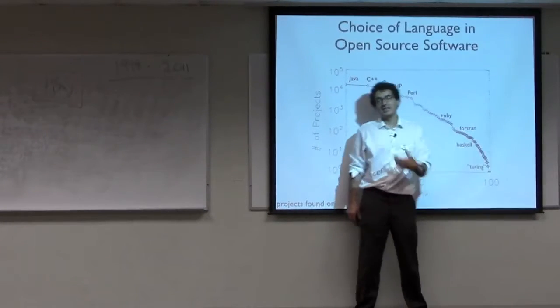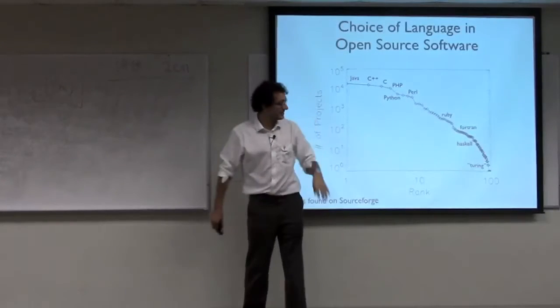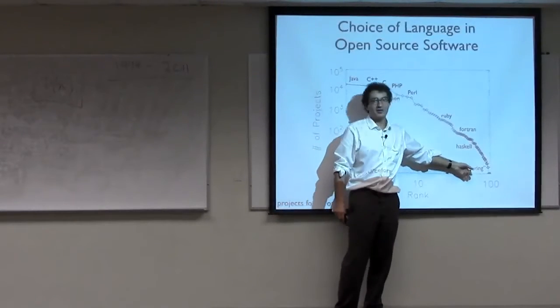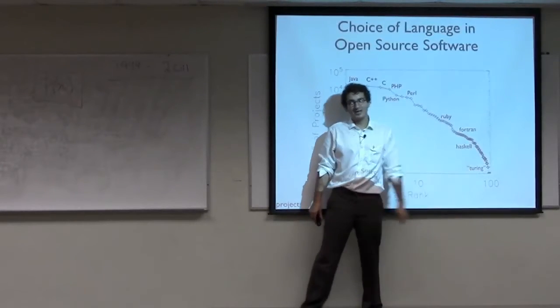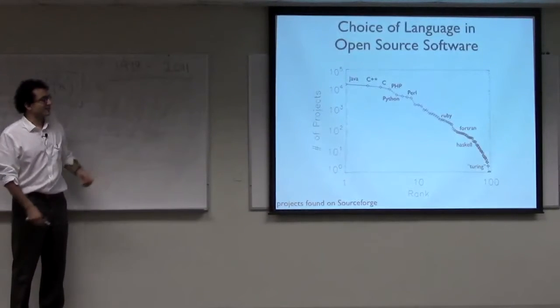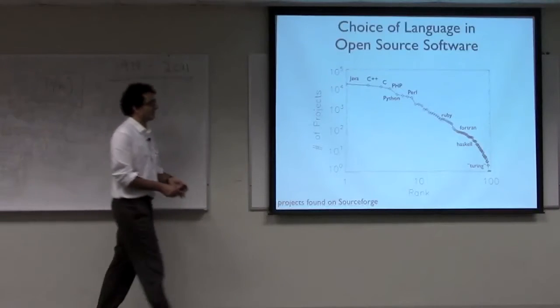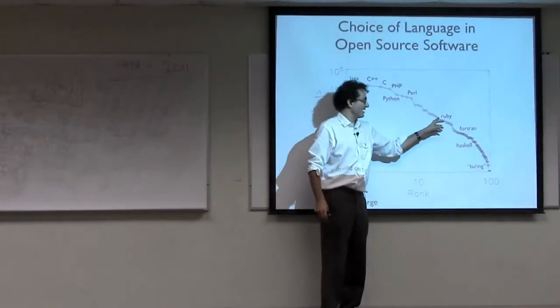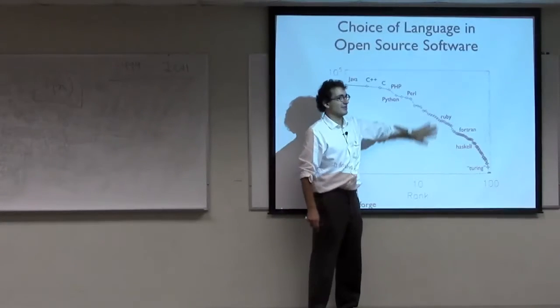So higher numbers mean lower ranks. Second, third place, fourth place, so a hundredth place. Down out here, around a hundredth place, is a very unfortunate language called Turing, which has only, as far as I'm aware in the archive, only two projects written in Turing. And you can see some of my favorite languages, like Ruby, are somewhere here in this kind of moderate popularity zone.